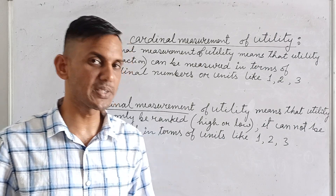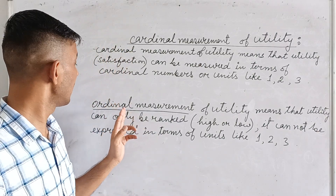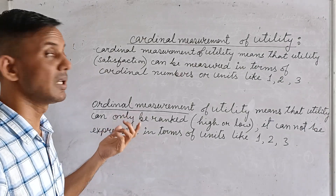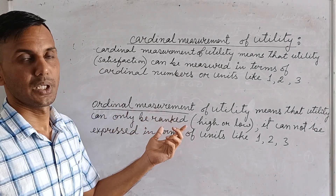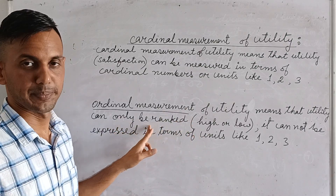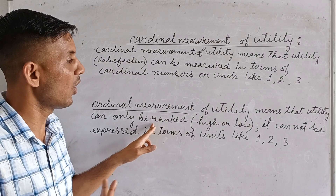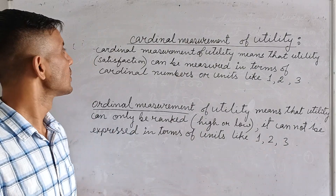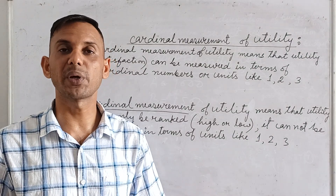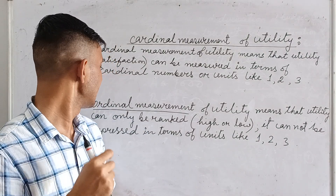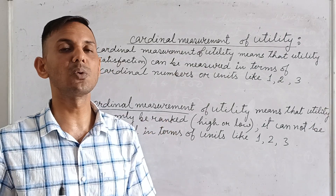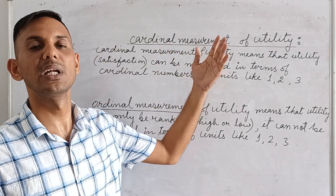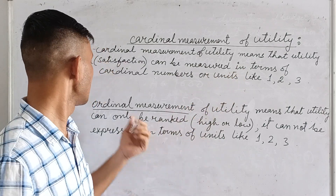Indifference curve analysis is associated with ordinal measurement of utility, just as utility analysis is associated with cardinal measurement. Ordinal measurement of utility means utility can only be ranked — high or low — it cannot be expressed in terms of units like 1, 2, 3. So cardinal utility is associated with total utility and marginal utility, while ordinal measurement of utility is associated with the indifference curve.